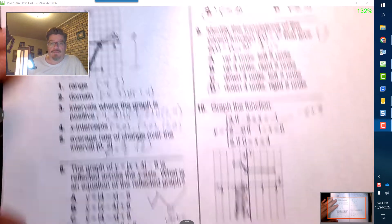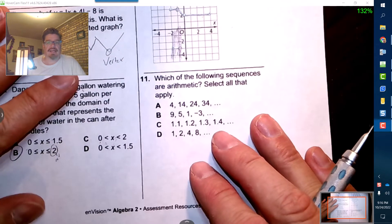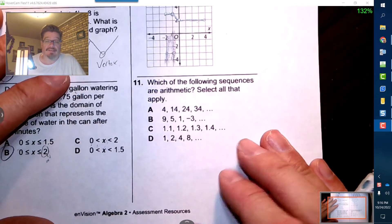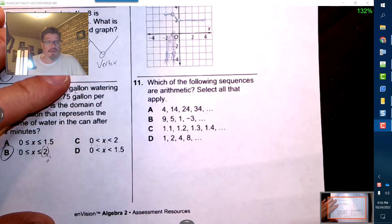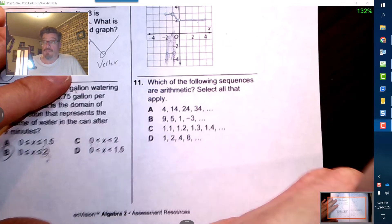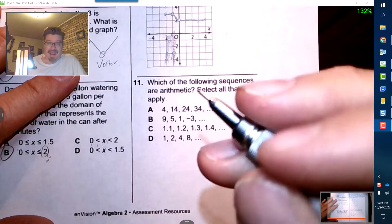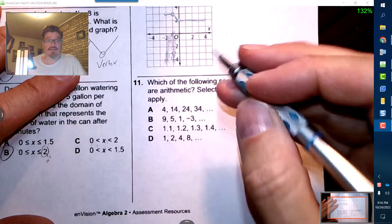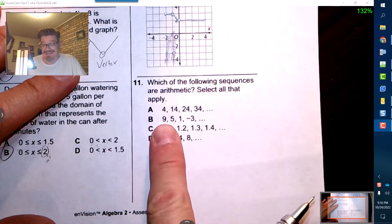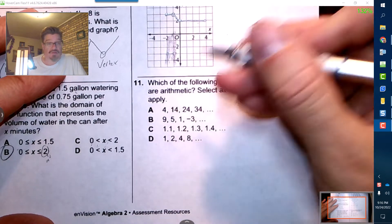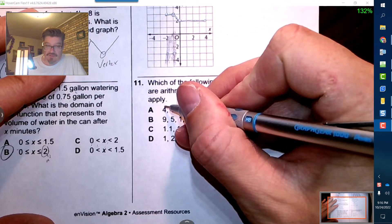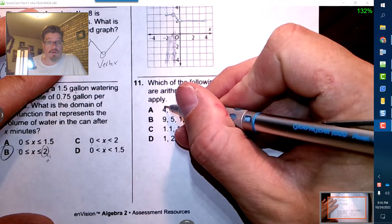All right, number 11 is actually now arithmetic sequences. So what you do, you're going to circle the ones that actually are arithmetic. Now if you remember when we discuss these, it has to be consistent from one number to the next for the entire part that's given. All right, so let's start with A. Now we notice that we have a starting value, initial value of 4, and it looks like it goes up by 10, by 10, by 10.